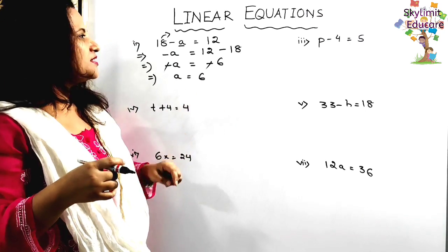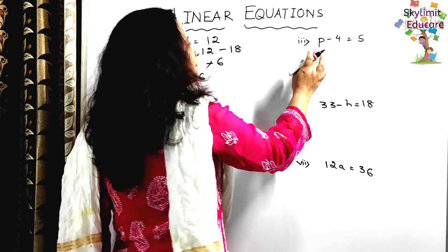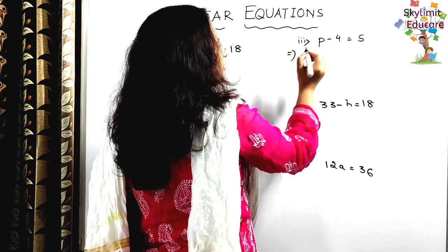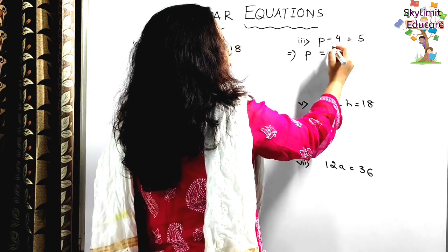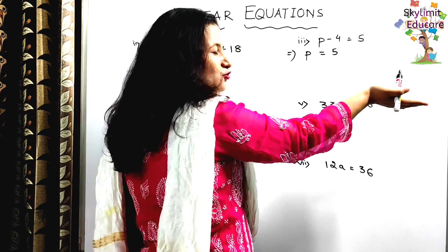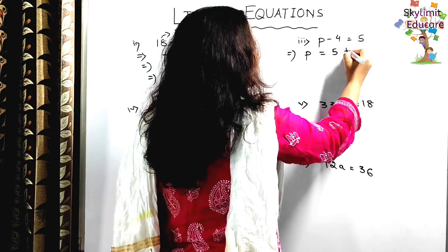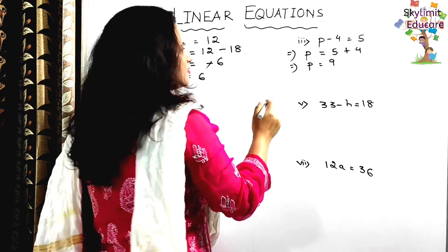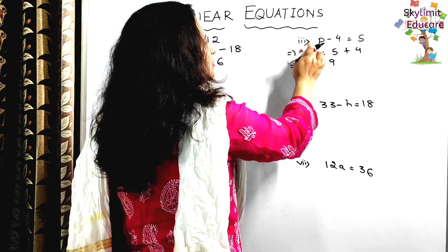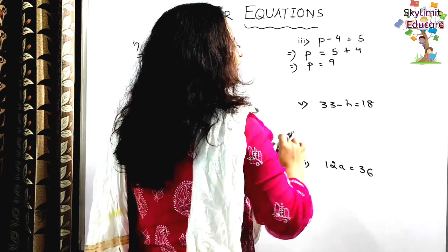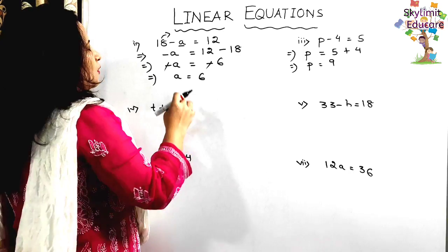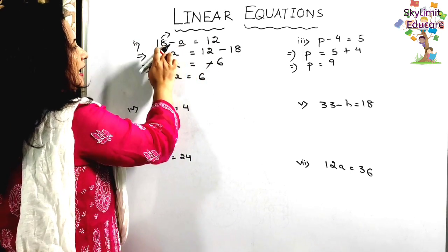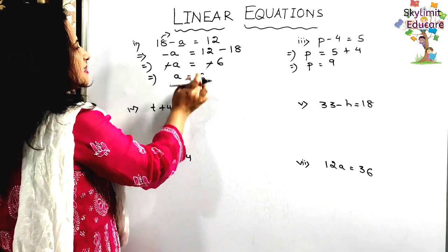Next: p minus 4 equals 5. I keep p on the left-hand side and shift minus 4 to the right-hand side — it becomes plus 4. So p equals 5 plus 4 equals 9. Verify: 9 minus 4 equals 5. Correct.